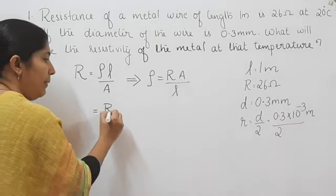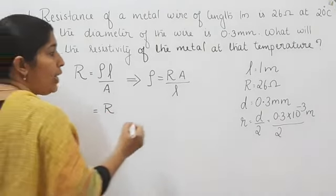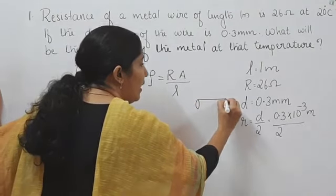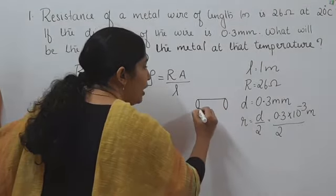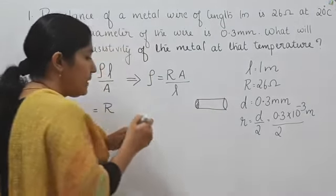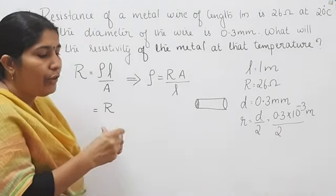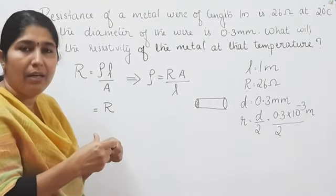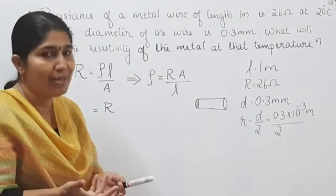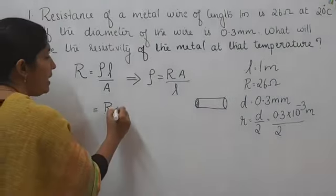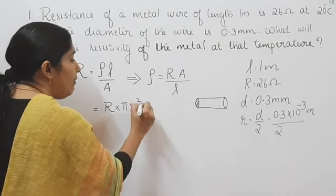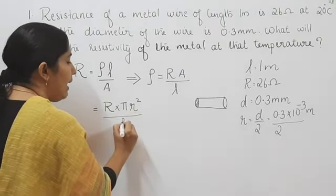Resistance R is given. What about the area of cross section? If this is the wire, one end of the wire is in the form of a circle, so area of cross section is equal to pi R square. So we can write resistivity rho as pi R square divided by length L.